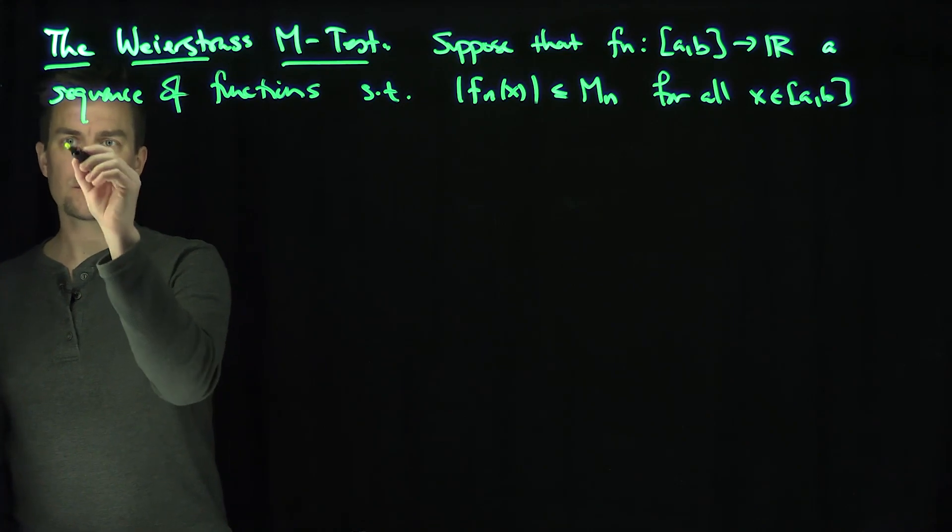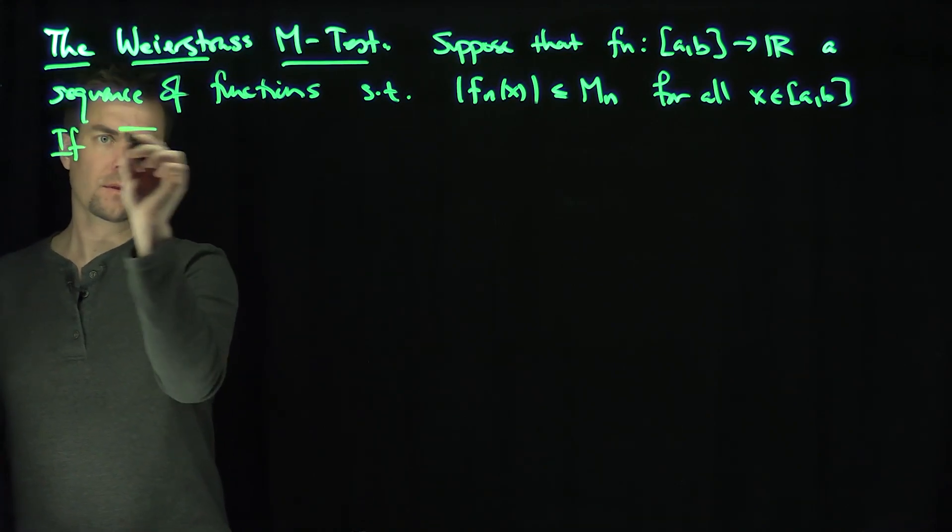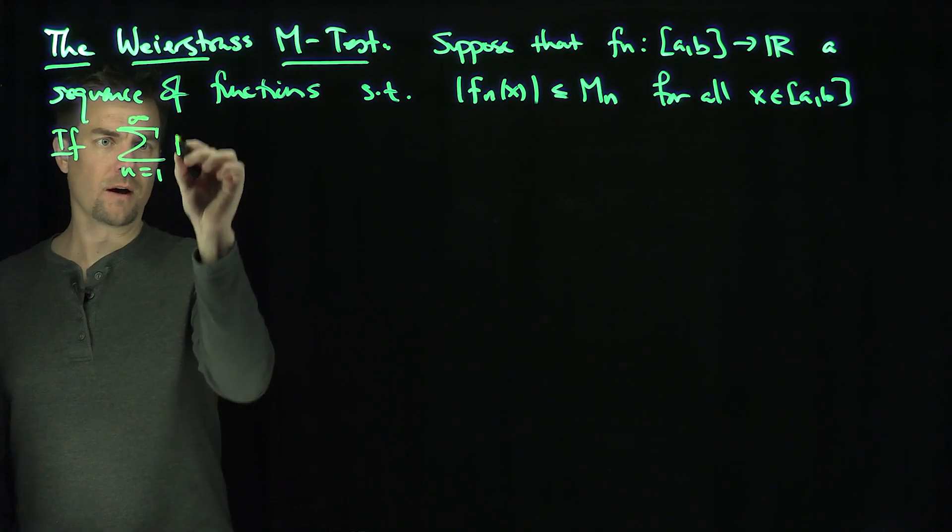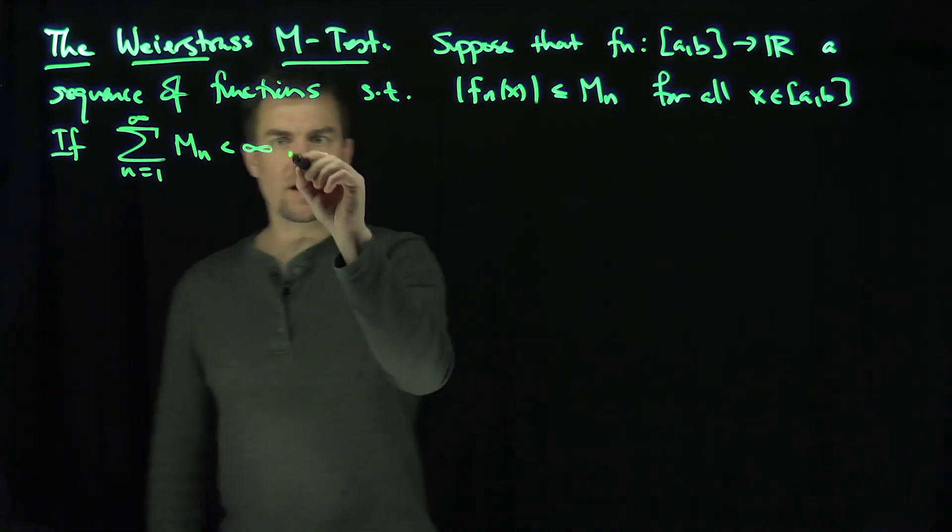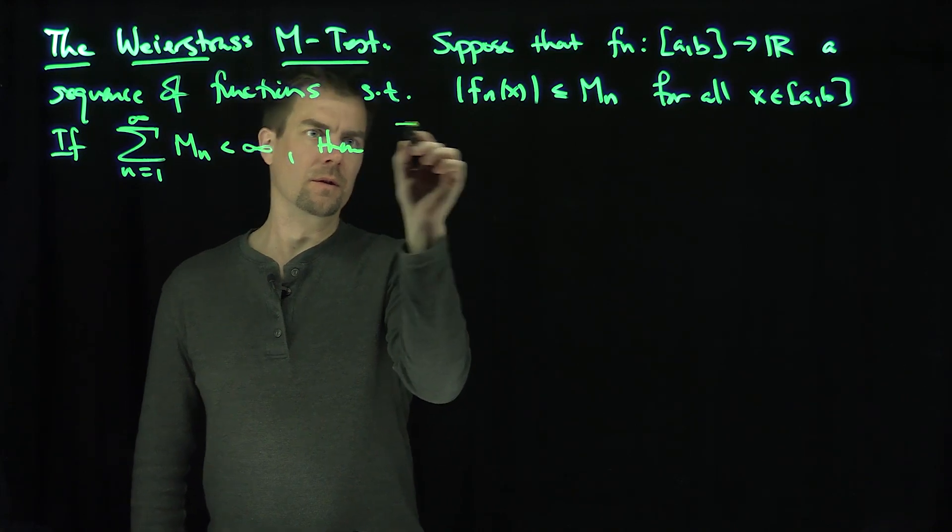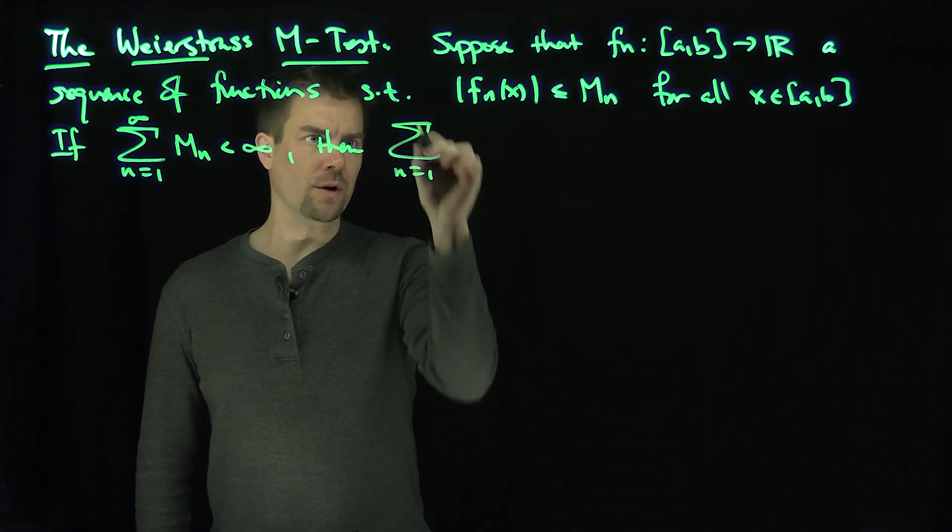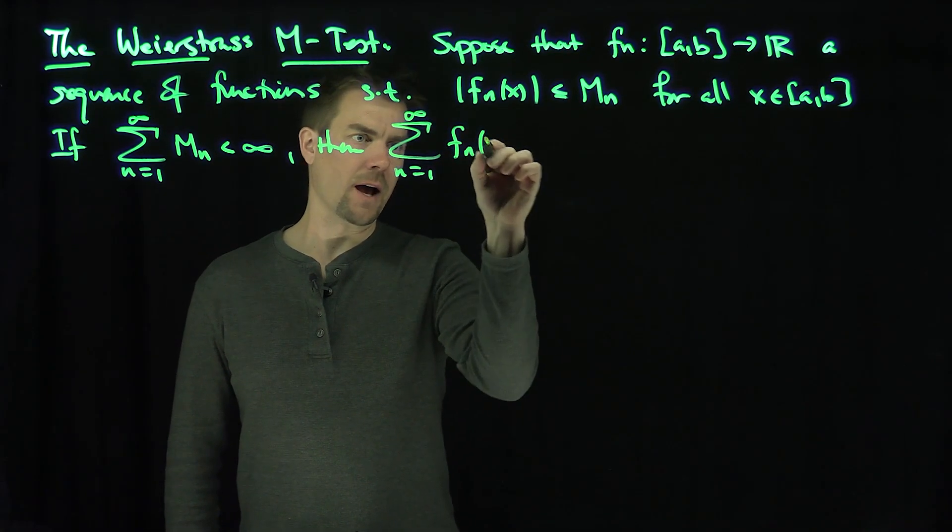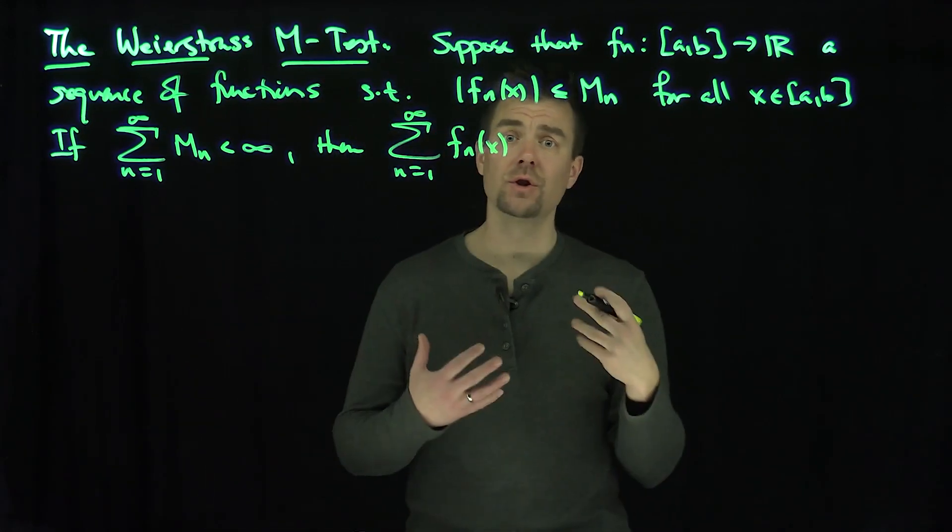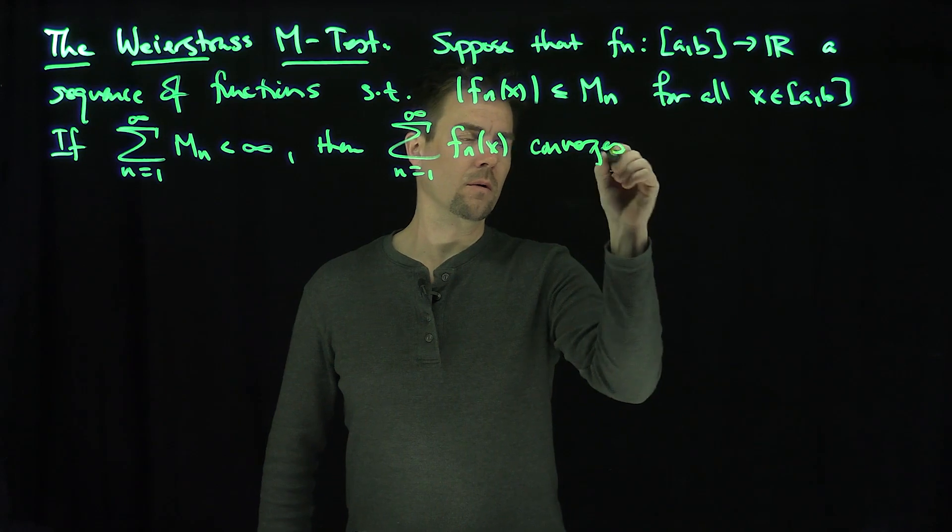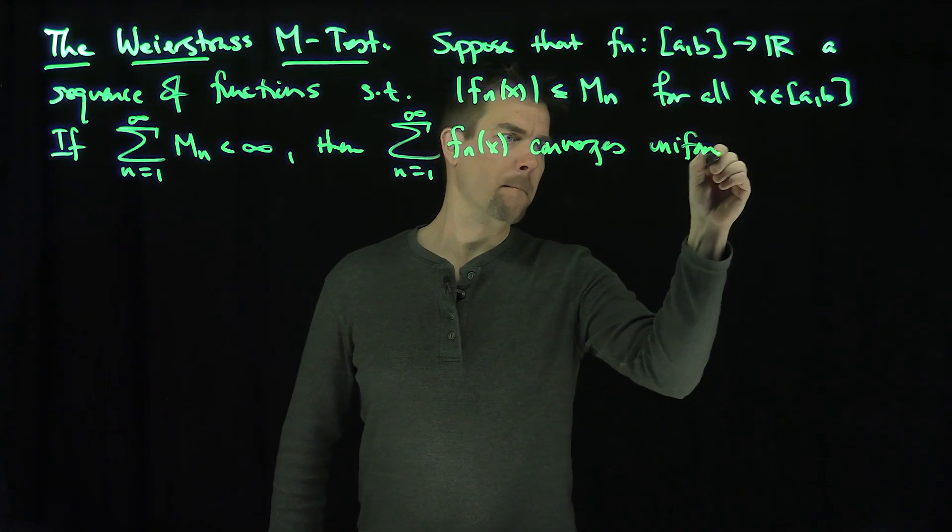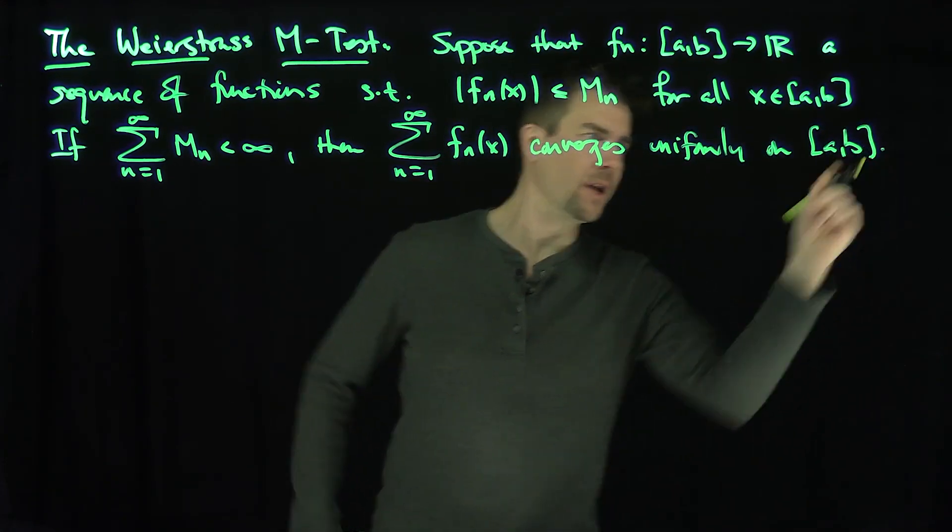If the sum from n=1 to infinity of m_n converges, so if these non-negative numbers m_n converge, then the sum from n=1 to infinity of f_n(x) converges uniformly on (a,b).